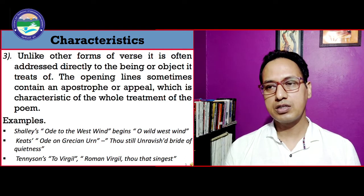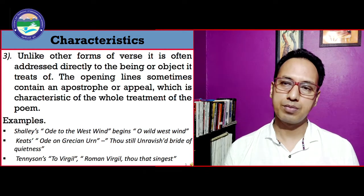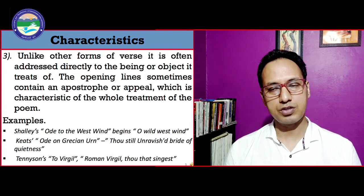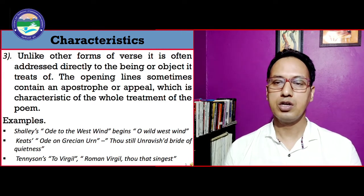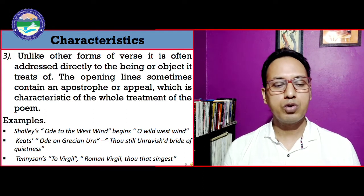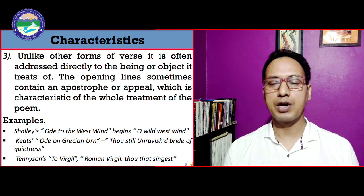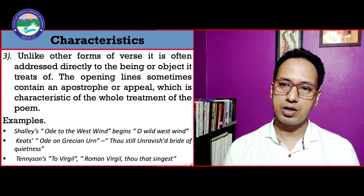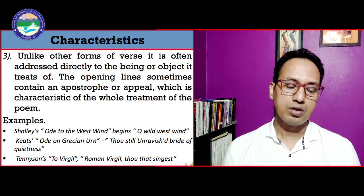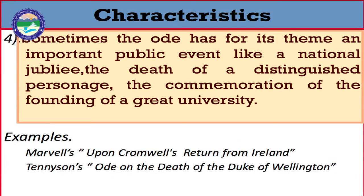For example, Shelley's 'Ode to the West Wind' begins: 'O wild West Wind' — this is the apostrophe, a figure of speech where we address somebody with an exclamation. Another example is Keats's 'Ode on a Grecian Urn,' which starts: 'Thou still unravish'd bride of quietness' — totally addressing the urn. Similarly, Tennyson's ode 'To Virgil' begins: 'Roman Virgil, thou that singest.'